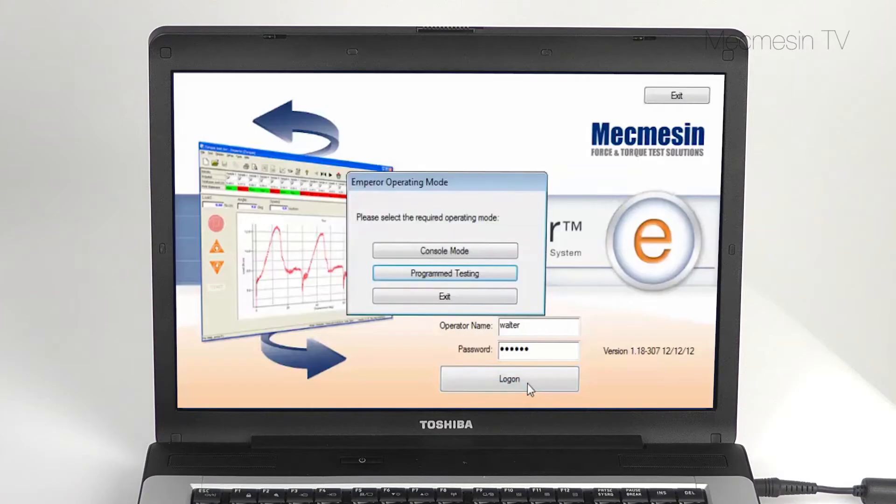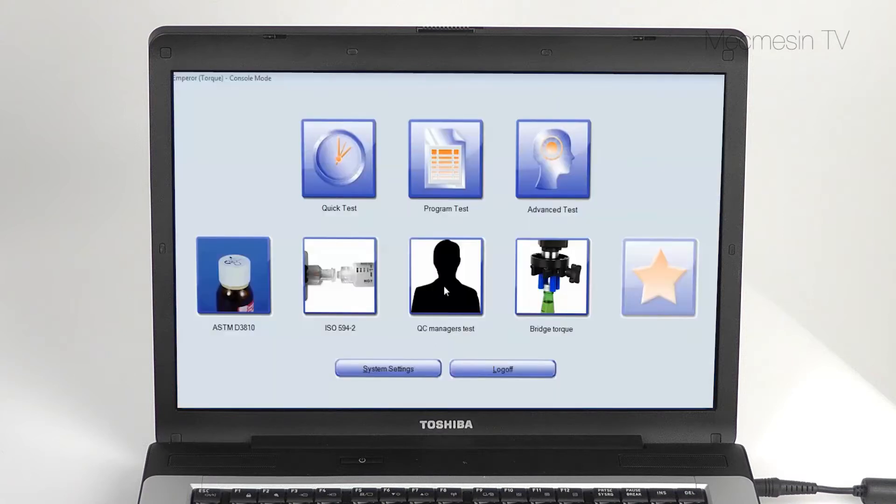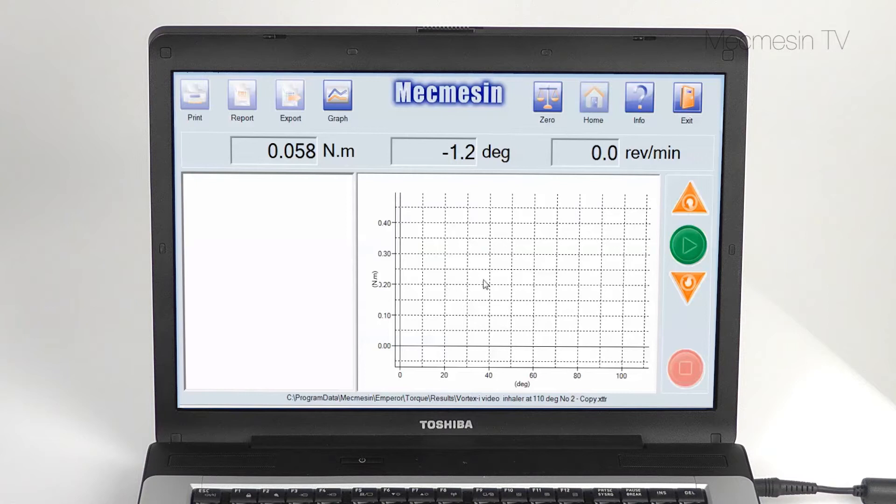The console mode makes Emperor even easier to use. It's ideal for the factory floor where operators only need minimal training to load and run programs directly from one of the five favourite buttons.